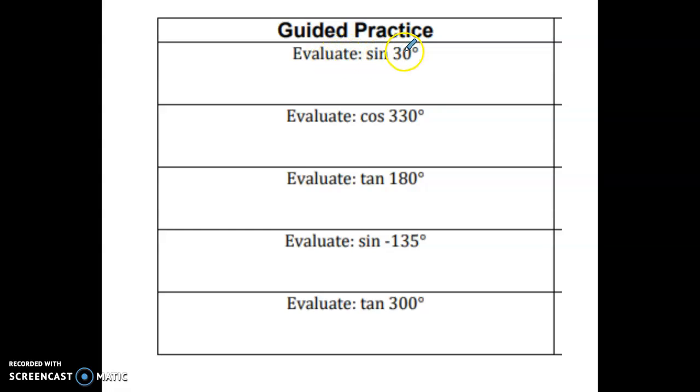So it says evaluate the sine of 30. I can't really point to the unit circle, so I'm just going to explain what I would look at. So on the unit circle, I would find 30 degrees and then I would look at the coordinates. The coordinates are square root of 3 over 2 and 1 half. Since it's the sine, I know that it's the Y coordinate. So the answer is 1 half.